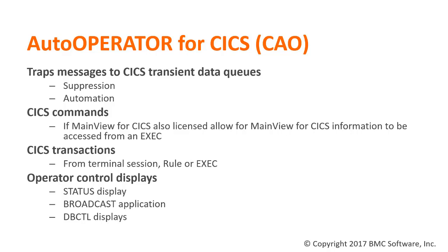Auto Operator for CICS can also be used for issuing CICS commands based on a particular condition or event, and CICS transactions may also be started through Auto Operator. The Operator Control Displays within Auto Operator for CICS allow you to verify the status of your CICS regions, send broadcast messages to all CICS connected terminals — for example, to notify users that a region is being brought down. There are also panels to automate the CICS DB control environment when CICS is communicating with an IMS region, including starting and stopping IMS databases.